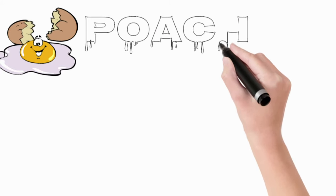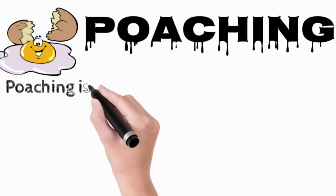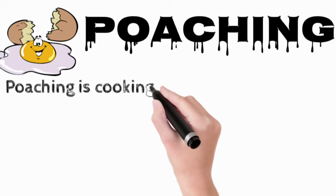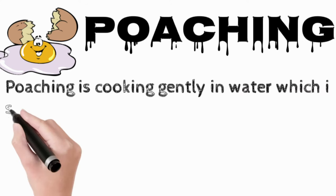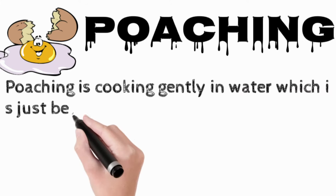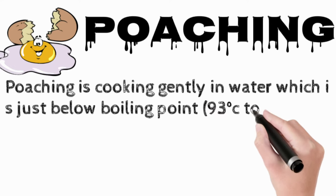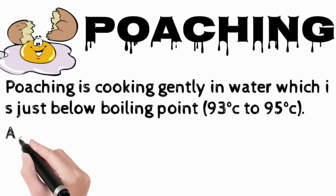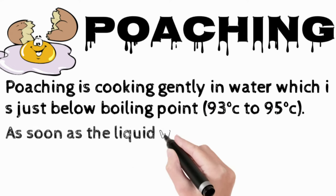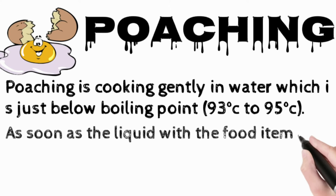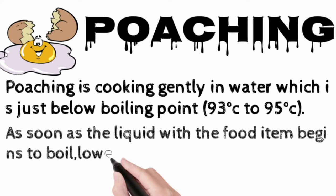Poaching: poaching is cooking gently in water just below boiling point, at 93 to 95 degrees Celsius. Food items should be completely immersed in the liquid and left in throughout the cooking process. As soon as the liquid with the food item begins to boil, lower the temperature to allow poaching.